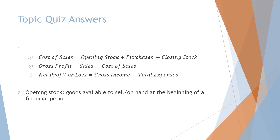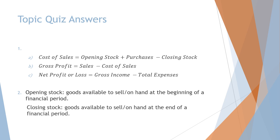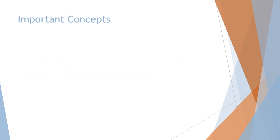Number two: opening stock is goods available to sell, or goods on hand, at the beginning of a financial period, while closing stock is goods available to sell, or goods on hand, at the end of a financial period.